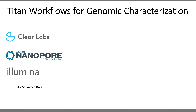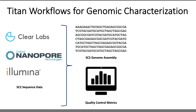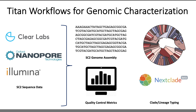As a refresher, the Titan workflows for genomic characterization include four separate workflows that take sequencing data from four different sequencing approaches — both paired-end and single-end Illumina data, ClearLabs read data, and ONT data. With the input read data from these platforms, these Titan workflows generate SARS-CoV-2 consensus assemblies, provide metrics to gauge the quality of those assemblies, and provide genomic characterization through Pangolin and Nexclade typing.